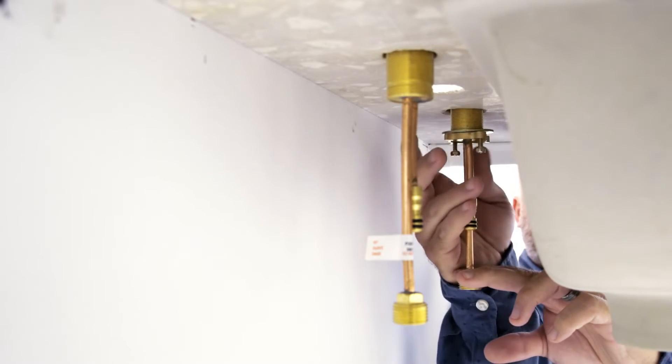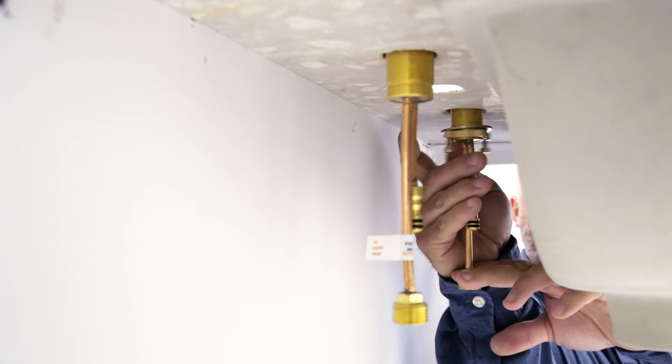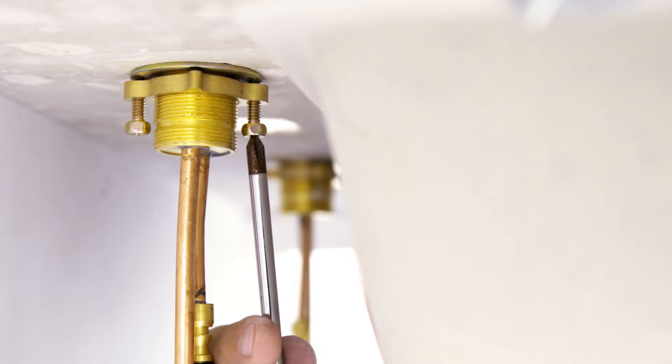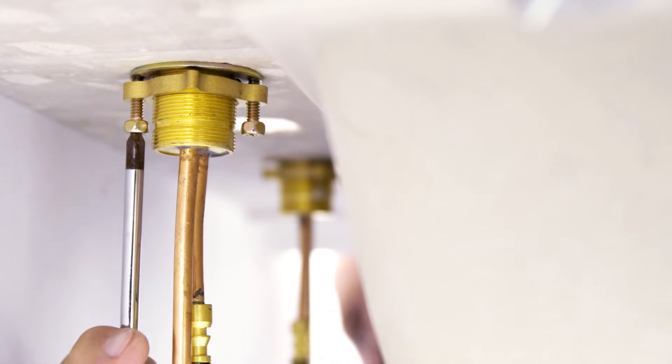Secure the end valves with washers and threaded brackets. Hand tighten the brackets onto the shank, then use a Phillips head screwdriver to lock the brackets into position by tightening the screws.